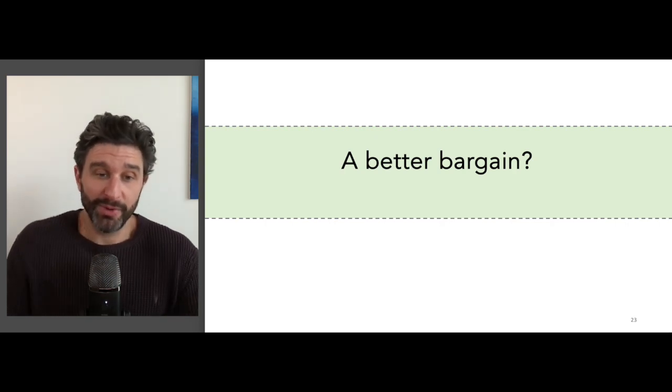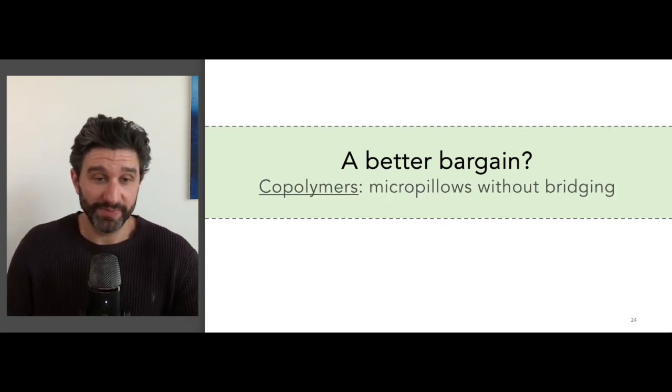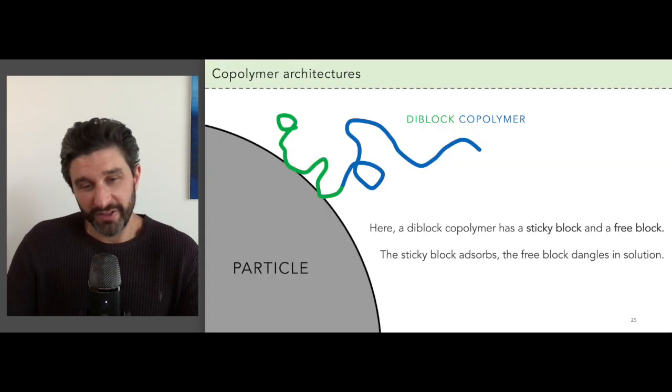Is there a better bargain we can come up with? And the answer is yes. The way we can get a better bargain is if we employ copolymers as dispersants. For example, one kind of copolymer we can use is a diblock.